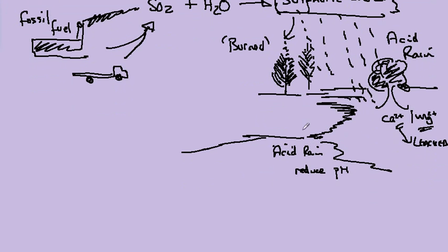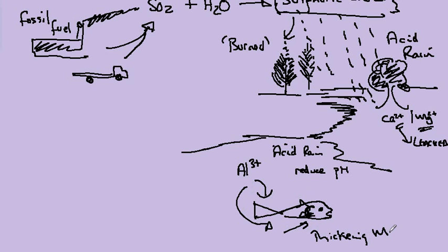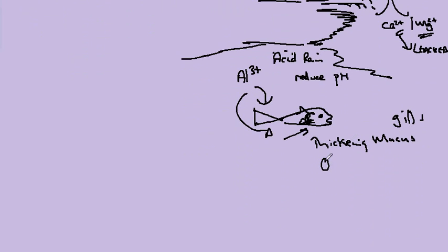The effect that this has is it brings about a release of aluminum ions, and this has an effect on fish. Let's draw a fish as best we can. The important thing is to try and show the gills of the fish because the aluminum causes the thickening of the mucus that lines the gills and reduces the fish's ability to take oxygen from water. In effect, the fish suffocates.